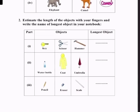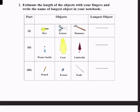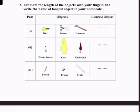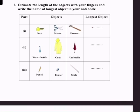Number 2: estimate the length of the objects with your fingers and write the name of the longest object in your notebook. Key, scissors, or hammer. The longest object is hammer.